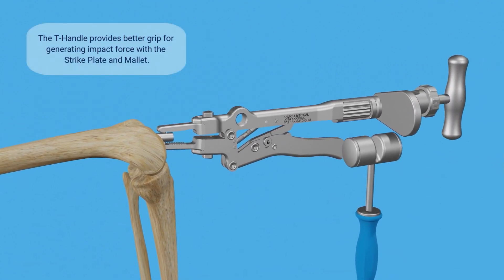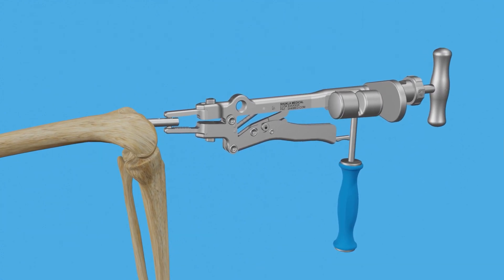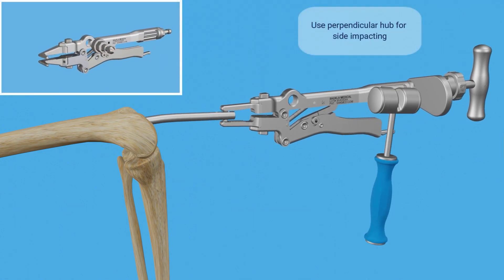The T-handle provides better gripping for generating similar impact forces with the strike plate and mallet. To impact in the perpendicular direction, use the perpendicular hub.